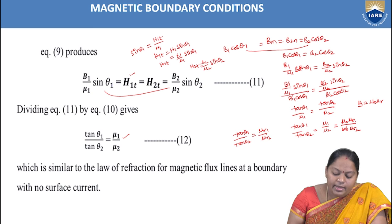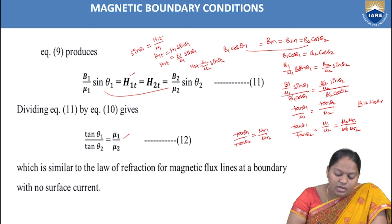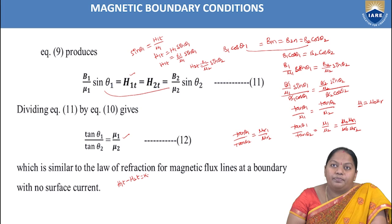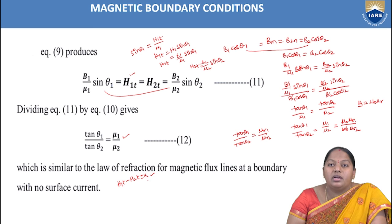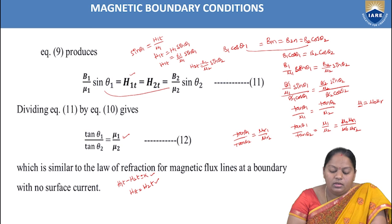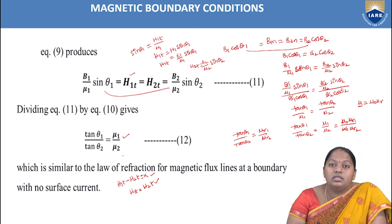This equation tanθ1/tanθ2 = μ1/μ2 is called the law of refraction for magnetic flux lines at a boundary with no surface current. This law is valid only when K = 0; in the presence of surface current density, H1t − H2t = K and the refraction law cannot be directly applied.